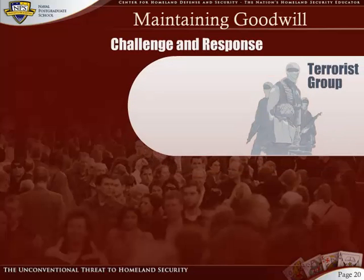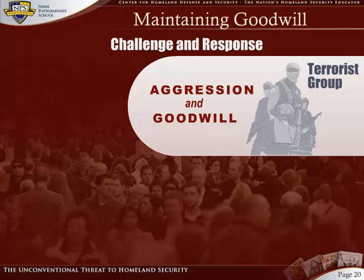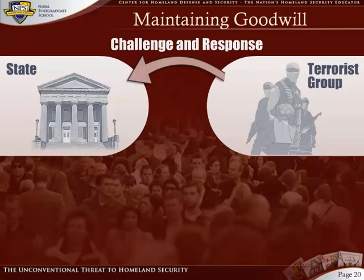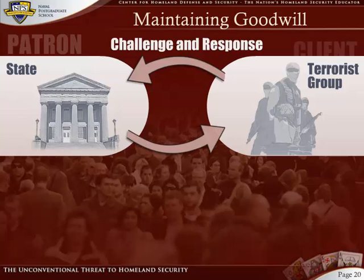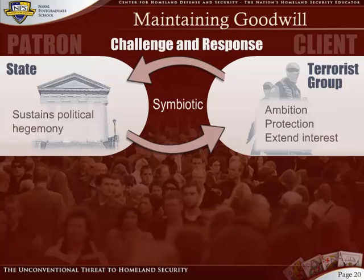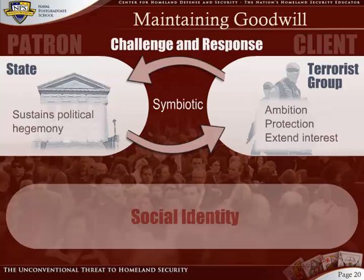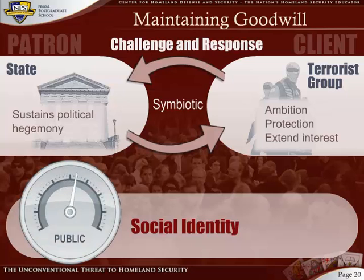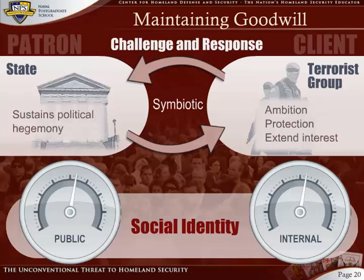The challenge and response model also offers insight into not only intergroup aggression, but also the mechanisms for creating and maintaining goodwill within a group. It describes the dynamics at play when terrorist groups approach potential patrons, and likewise when states or larger terrorist groups seek out smaller terrorist groups as clients. Patrons and clients operate in a symbiotic relationship: clients attach themselves to more powerful patrons — either for ambition, protection, or to extend a particular interest — while the patron protects and assists the group in exchange for sustaining the patron's political hegemony. This exchange can have serious implications for both patron and client in terms of social identity, as it affects the public perception of both, and also internal social identity when members may be in disagreement about the benefits or drawbacks of aligning their group with another.